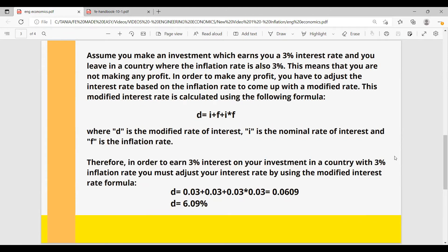Let's have an example. Assume you make an investment which earns you a 3% interest rate and you live in a country where the inflation rate is also 3%. This means that you are not making any profit. You have to adjust the interest rate based on the inflation rate to come up with a modified rate. This modified interest rate is calculated using the formula.